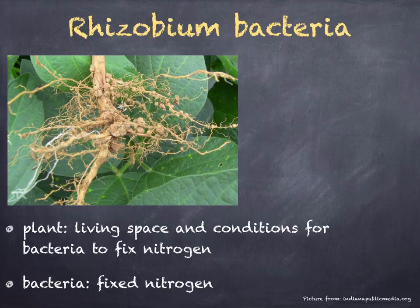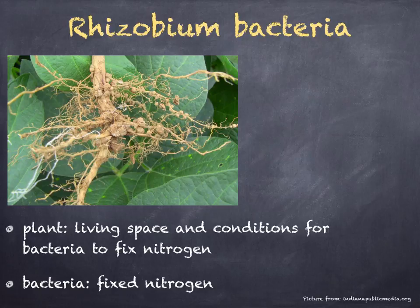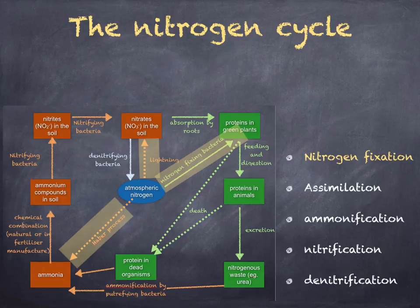The relationship between the bacteria and plant is an example of mutualism. The plant provides the living space for the bacteria, as well as the right conditions for the bacteria to fix the nitrogen. The bacteria provide fixed nitrogen for the plant. So we've just discussed nitrogen fixation, where atmospheric nitrogen is fixed into nitrates or ammonia.